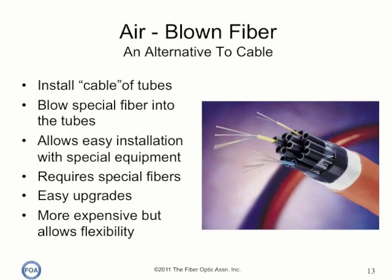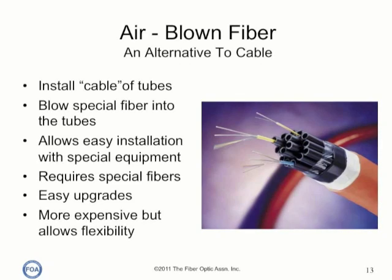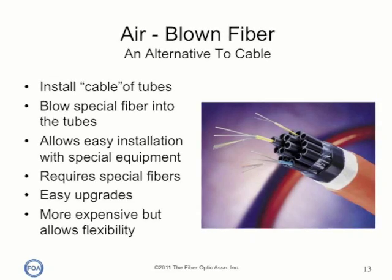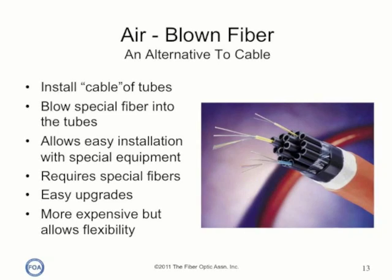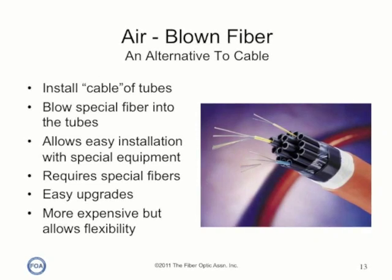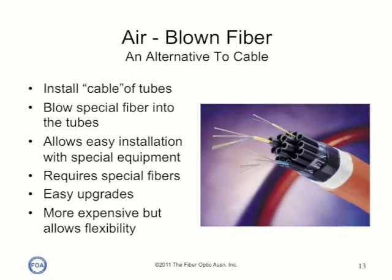Air blown fiber is an alternative to cable. Instead of installing cables with fibers, you install a cable of open tubes. After installation, you then blow special fiber into the tubes using high pressure compressed gas. Blown fiber can be used with multi-mode or single-mode fiber or a combination of the two. It requires special fibers designed to be installed this way — they are smaller and coated with a special plastic that creates less friction.